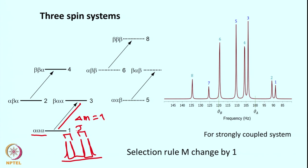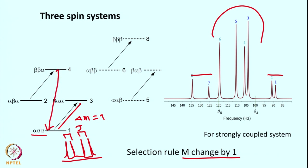For a strongly coupled system the central line has higher intensity than the outer lines. In all these cases ΔM changes by 1, so single quantum transitions occur. Double quantum transitions are possible but forbidden in standard NMR. Whether in AB, AX, or ABX systems, we focus on single quantum transitions and the lines that arise from them.